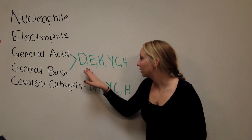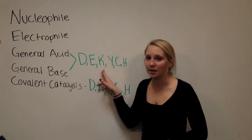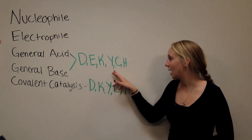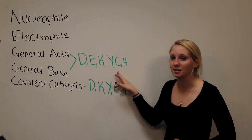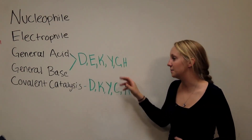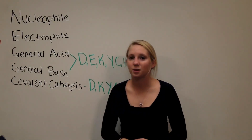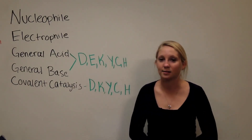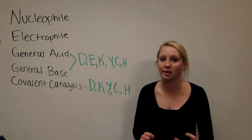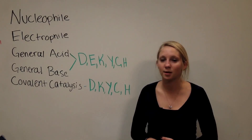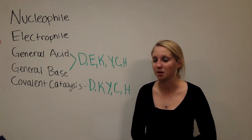Those residues are aspartate, glutamate, lysine, tyrosine, cysteine, and histidine. And lastly, covalent catalysis refers to a transient or temporary covalent bond that can form between enzyme and substrate.